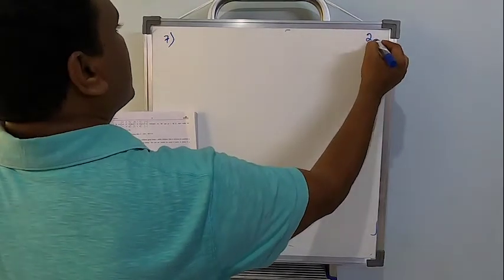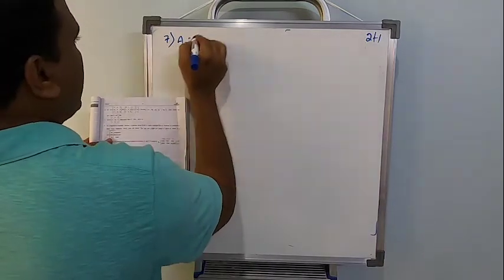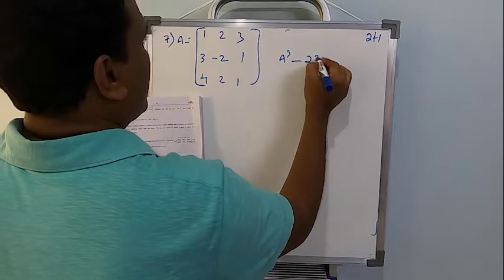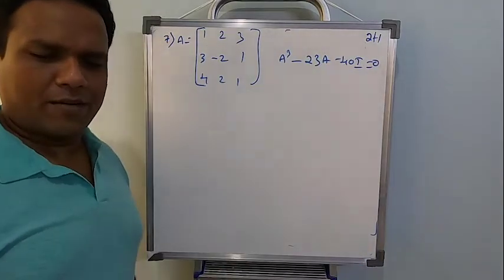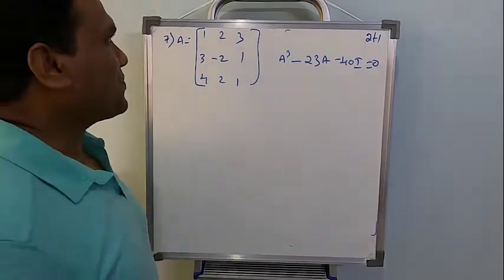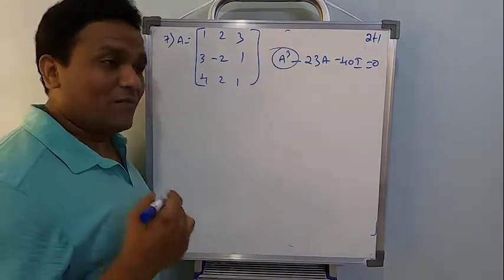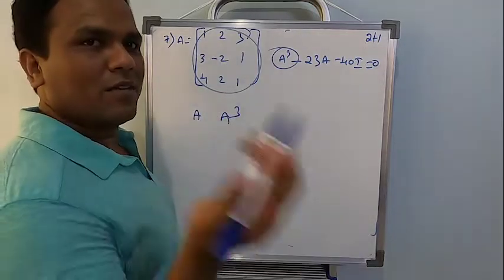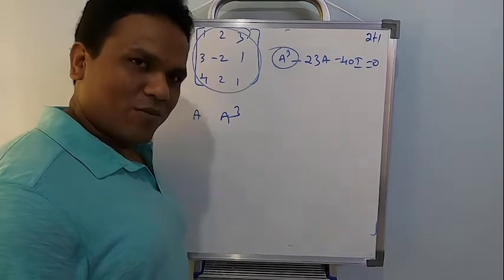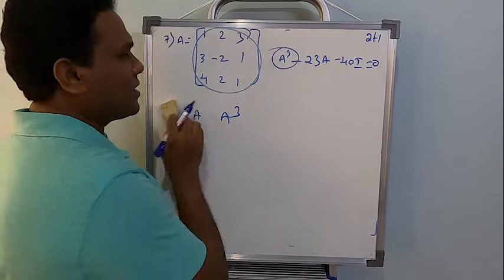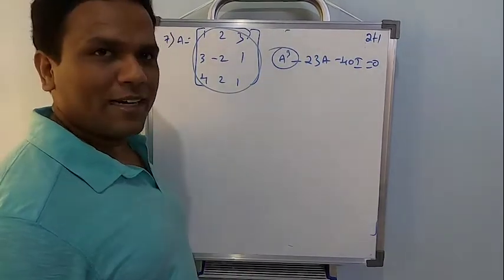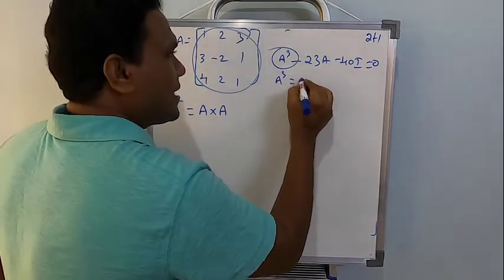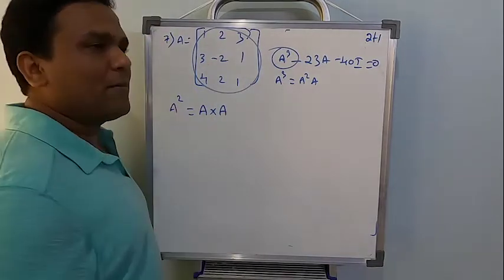Now the seventh one - again an important one. For five marks I have already discussed two problems; now this one is also going to be for five marks. If matrix A is given as 1, 2, 3; 3, minus 2, 1; 4, 2, 1 - then prove that A³ minus 23A minus 40I should be equal to zero. Some students have noticed - even in the final examination - if matrix A is given and you want A³, some students just cube every element from the matrix. Don't do that. How to find A³: A³ is written as A² multiplied by A. So first find A².